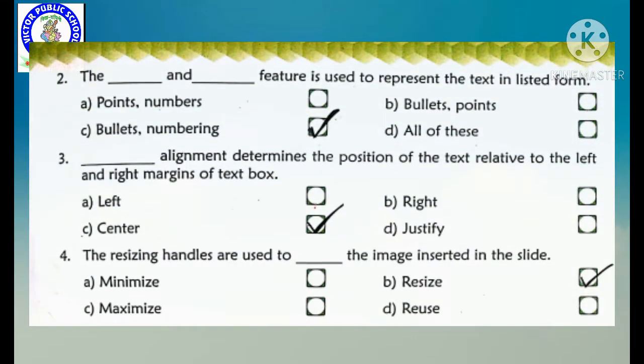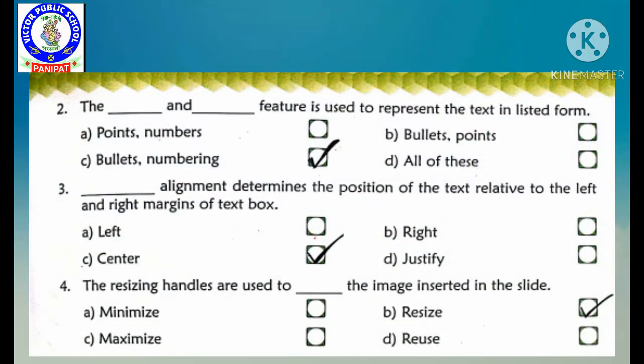Second is: the dash and dash feature you use to represent the text in a listed form. Kaun si features text ko list ki form mein present karate hain? Our options are point and numbers, bullet and points, bullets and numbering, or all of these. We will tick C, bullets and numbering, because bullets and numbering are used to represent the text in a listed form.